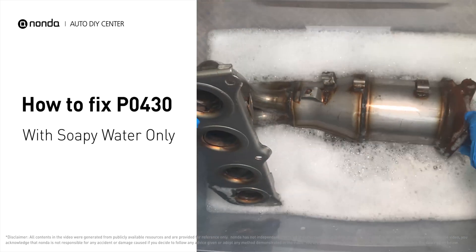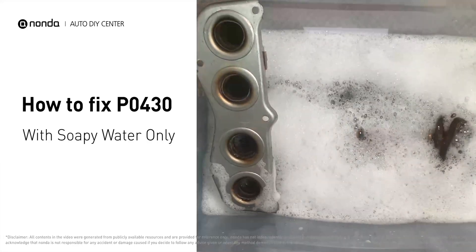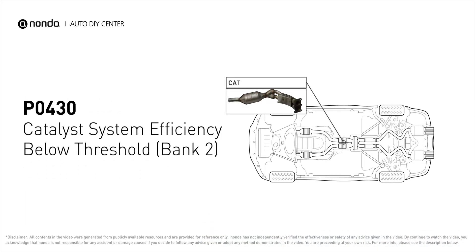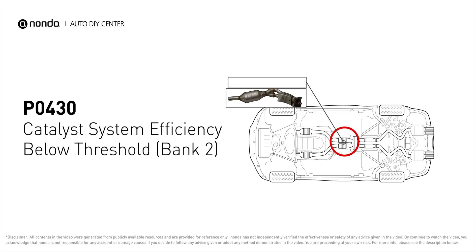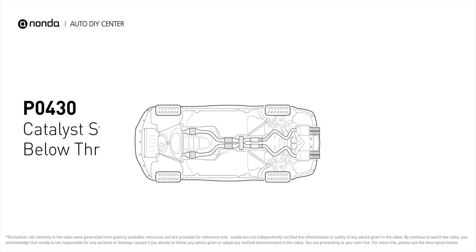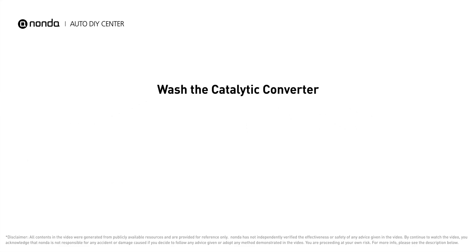With some soapy water, you can easily fix the P0430 error code by yourself. P0430 means your catalyst system efficiency is below threshold near engine bank 2, which indicates that the catalytic converter is not functioning efficiently, so the vehicle is increasing the output of harmful pollutants.